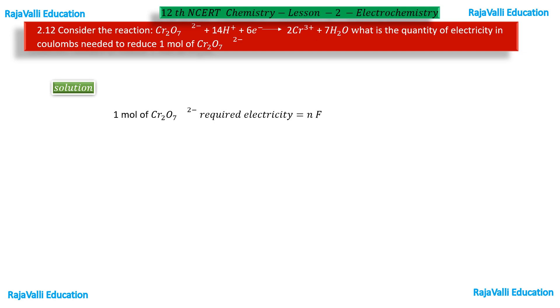Here we have to calculate the n value. It is given in the equation that is 6 electrons. N is equal to the number of electrons involved in this reaction. Here n equals 6.